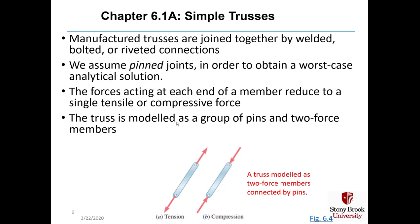When we calculate a truss modeled as a series of two-force members connected at pins, the forces acting in each member reduce to either a compressive or a tensile load. In figure 6.4a, the truss member is in tension because the arrows are shown pulling on the member, and in figure 6.4b, the truss member is in compression because the arrows are shown pushing on the truss member.